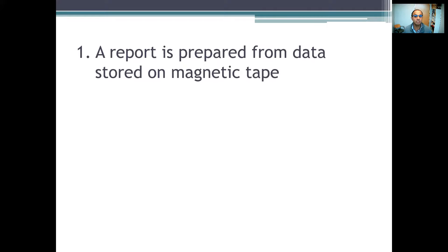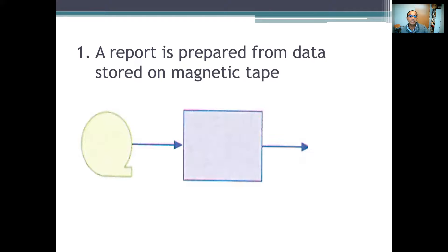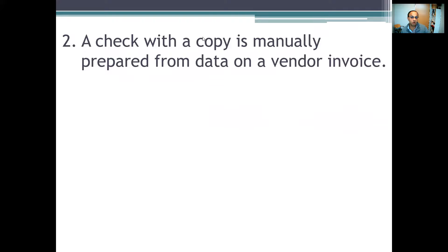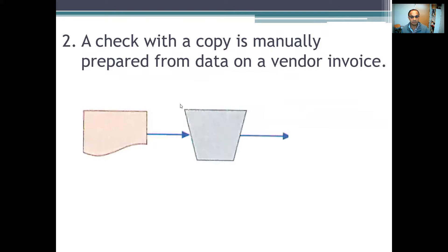For example: a report is prepared from data stored on magnetic tape. We start with the magnetic tape, then process it to build a document. So we start with the tape, process it, and output it as a report. Another example: a check with a copy — here we see a document with a copy that is manually, not electronically, prepared from data. So we get the vendor invoice as input for the manual processing, and we get the check and a copy as output.